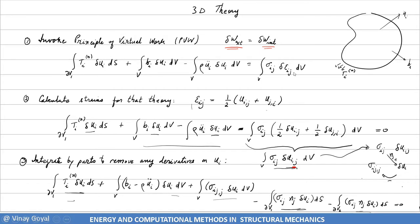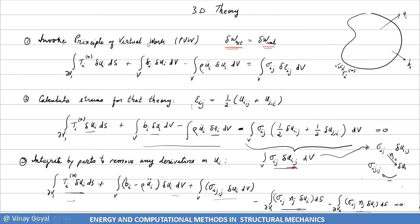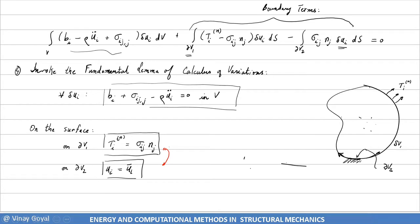We demonstrated that internal virtual work equals stresses moving through virtual strains. Using this formulation and the fundamental lemma of calculus of variations, the Euler-Lagrange equations give us Bi plus sigma_j comma_j minus rho*Ui double-dot equals zero. The boundary conditions, in a miraculous way, give us Cauchy's relationship and the deflection specified at boundary V2. At boundary V1, we have Cauchy's relationship. We did not use Newton's law at all — just using the principle of virtual work, we derived the equations of equilibrium.